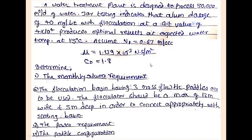Mu, the dynamic viscosity, is given as 1.139 × 10⁻³ Newton-seconds per meter squared. Cd is equal to 1.8. We need to determine: first, the monthly alum requirement; second, the flocculation basin having three cross-flow horizontal paddles; the flocculator should be a maximum of 12 meters wide and 5 meters deep to connect with the settling basin; and the power requirement and paddle configuration.